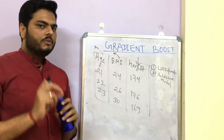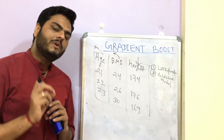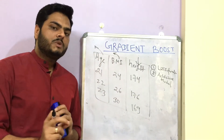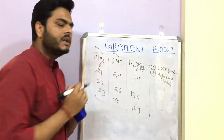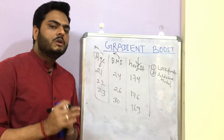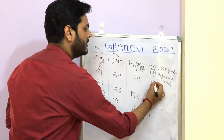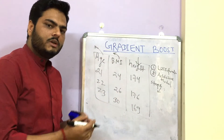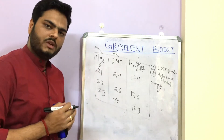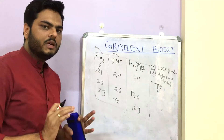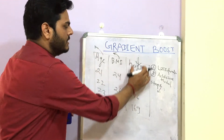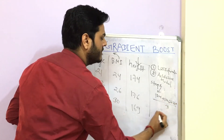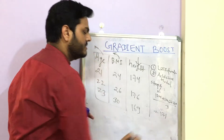The very first thing the boosting algorithm does is compute the first residual. Since we have no predicted value yet, in step one the boosting algorithm computes the average of the target column. For a regression use case, we compute the average height: 174 plus 176 plus 169 divided by 3. Let's say that equals 171.